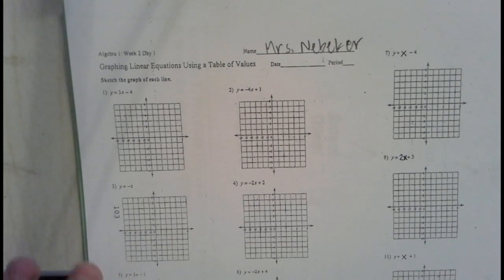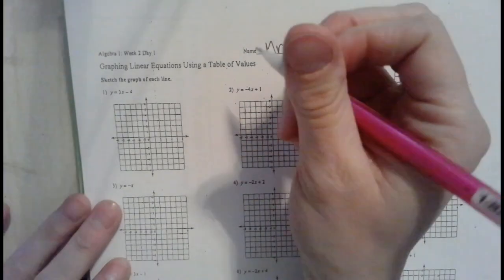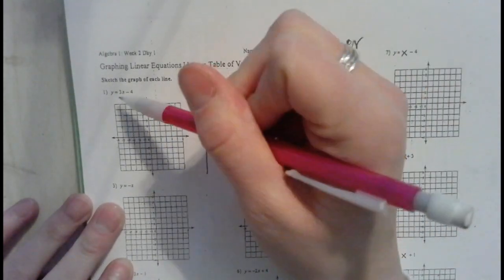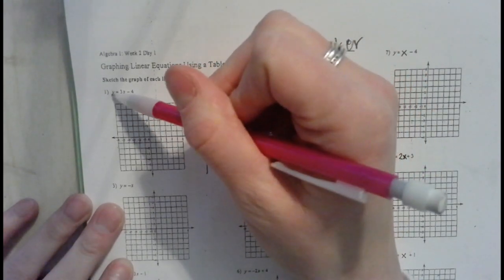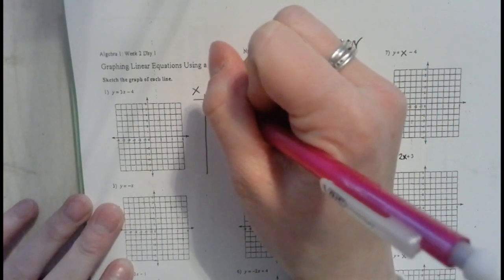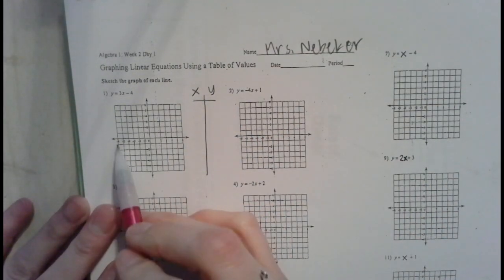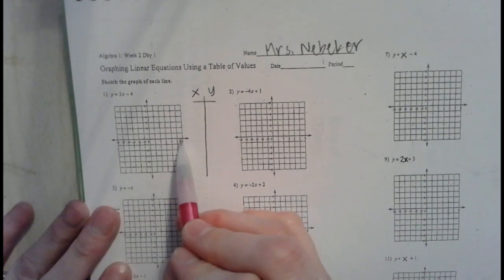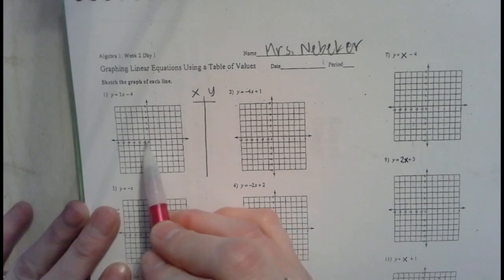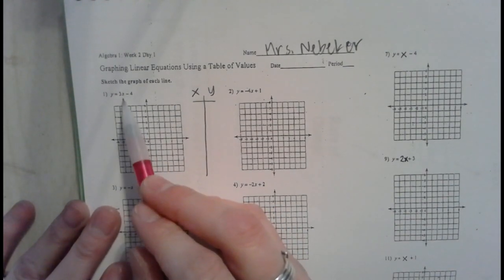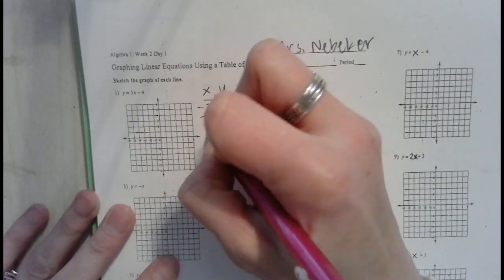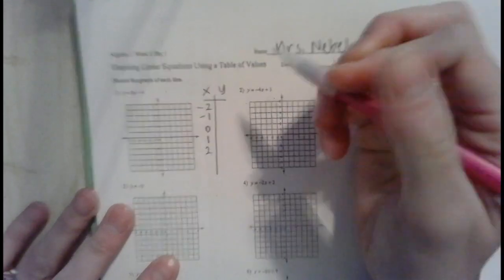Today we're going to be graphing using a table of values. We need values to represent our x values, plug them in for x, get new y values, and then graph our ordered pairs. These graphs all count by ones, so you can pick any x values you want that are on the grid. It's best to pick four near the center, so I always pick negative 2, negative 1, 0, 1, 2.